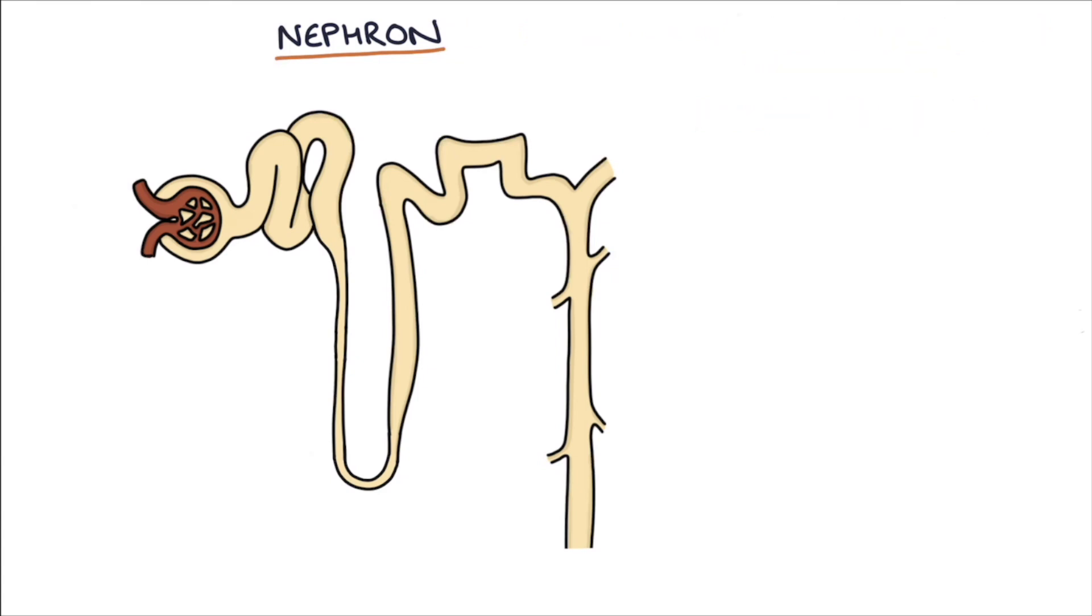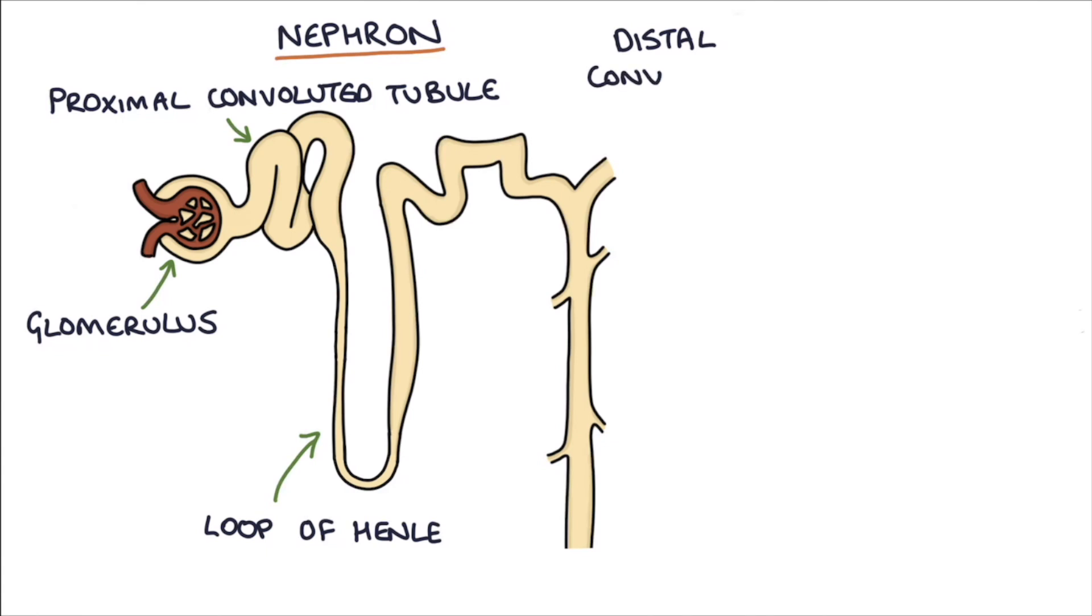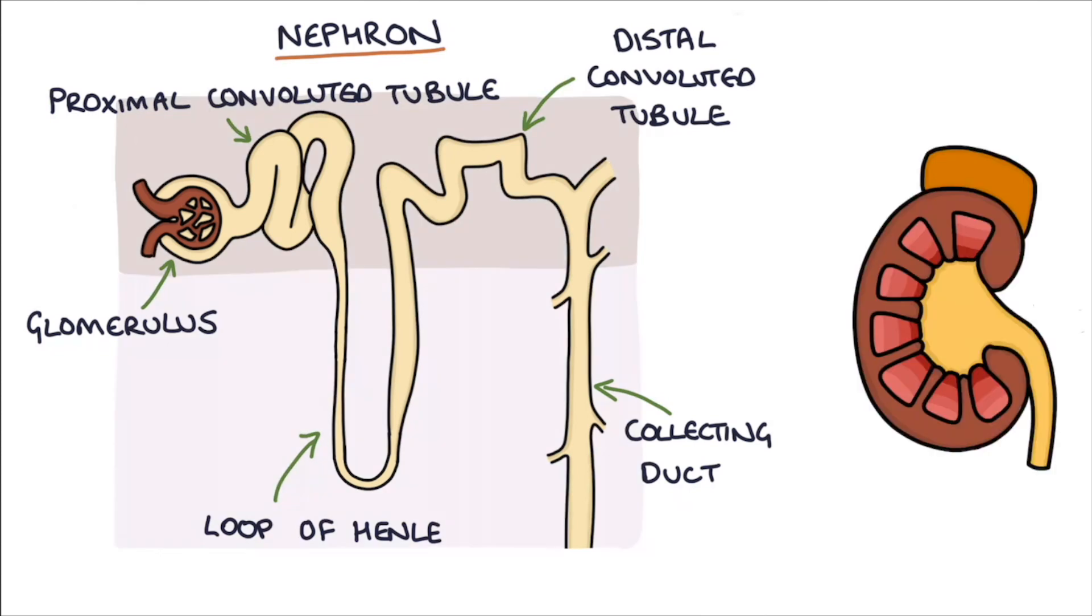The nephron consists of five main landmarks: the glomerulus, the proximal convoluted tubule, the loop of Henle, the distal convoluted tubule, and the collecting duct. The glomerulus and the convoluted tubules are in the cortex of the kidney, while the loop of Henle and the collecting duct pass down into the medulla.